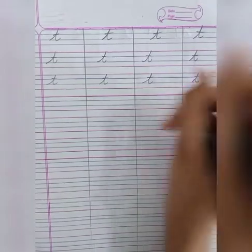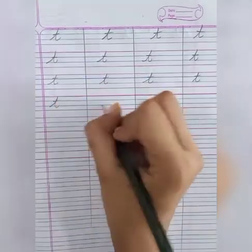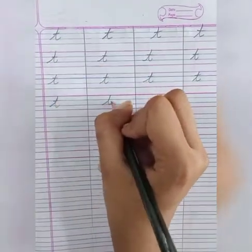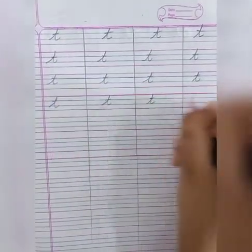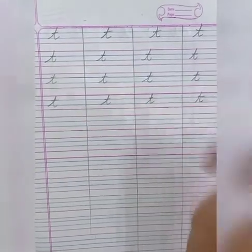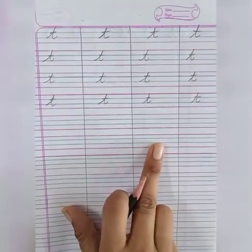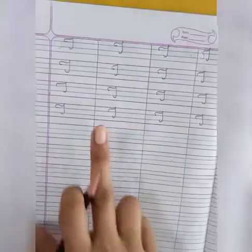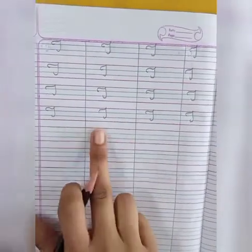So, this is small cursive T. This we have to write in three lines. So, this is small cursive T and this is capital cursive T.